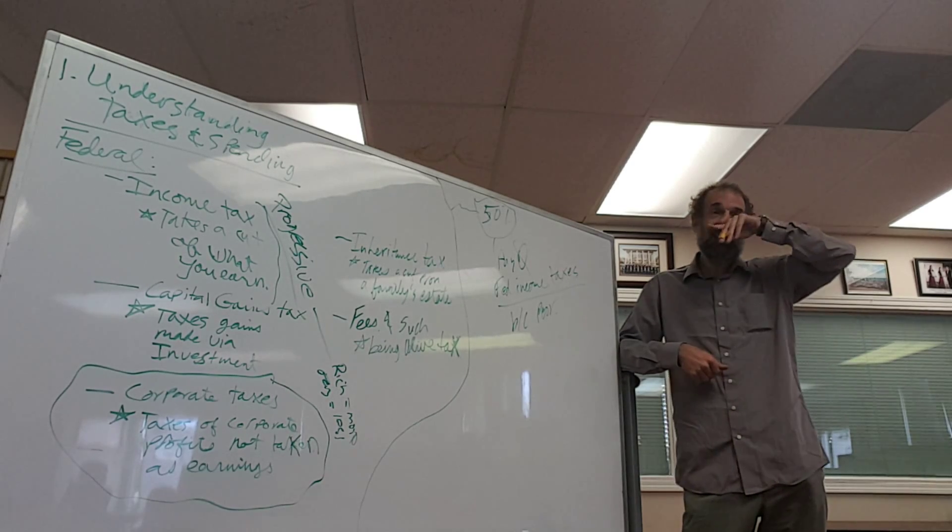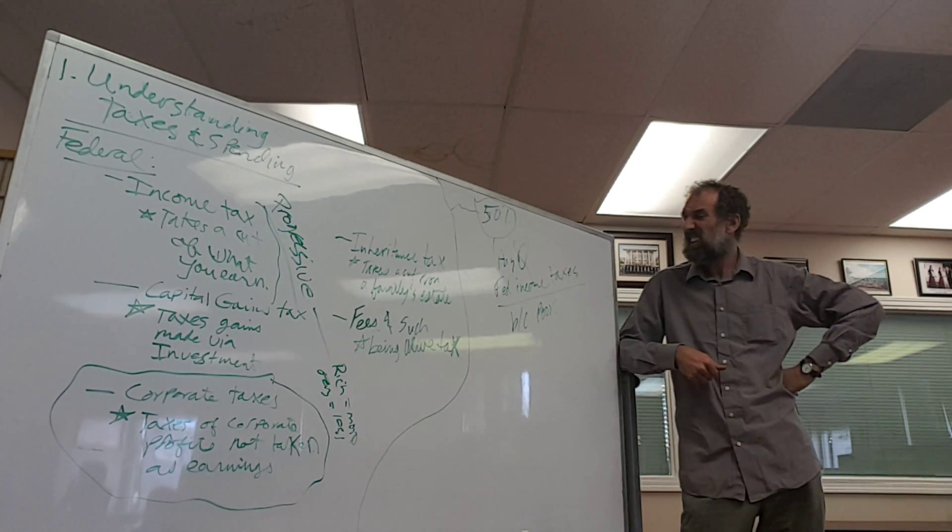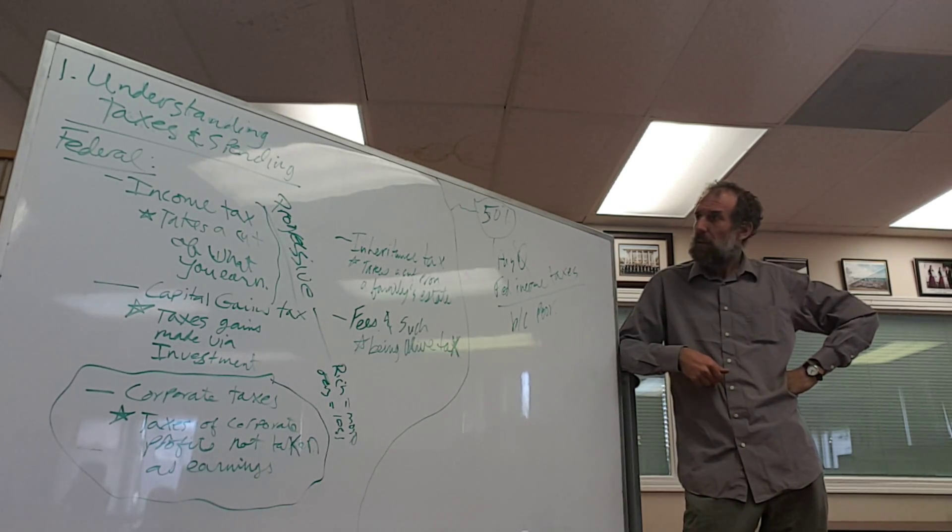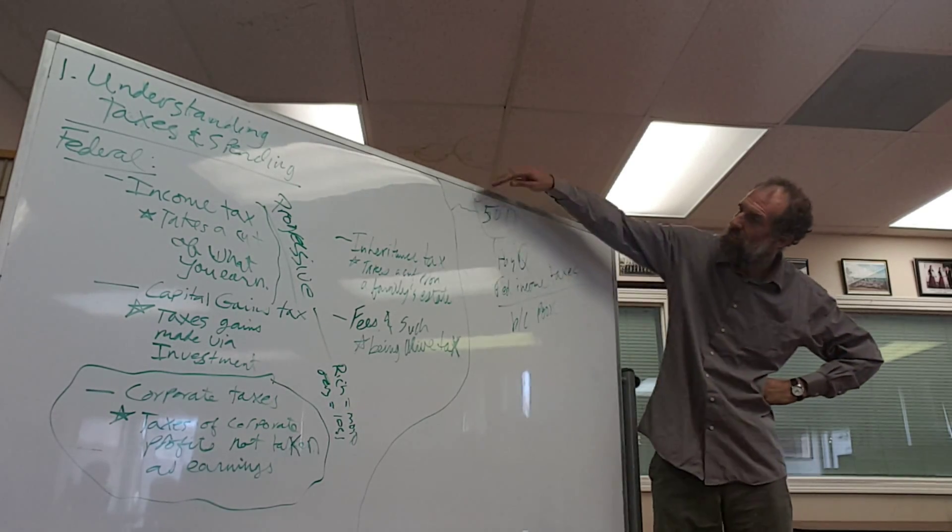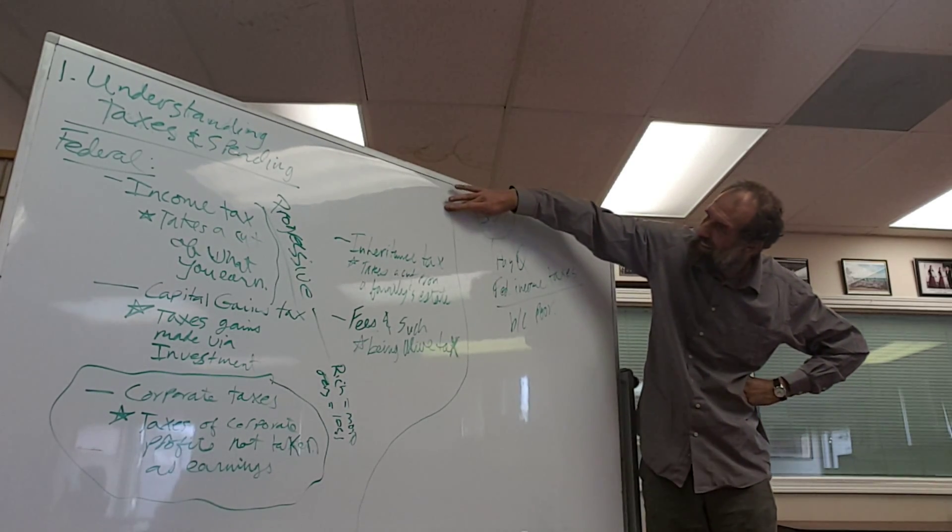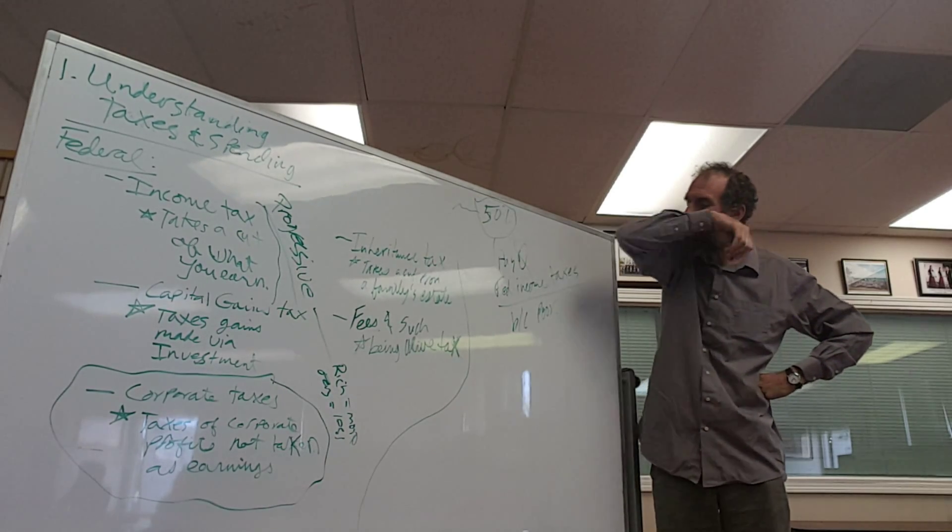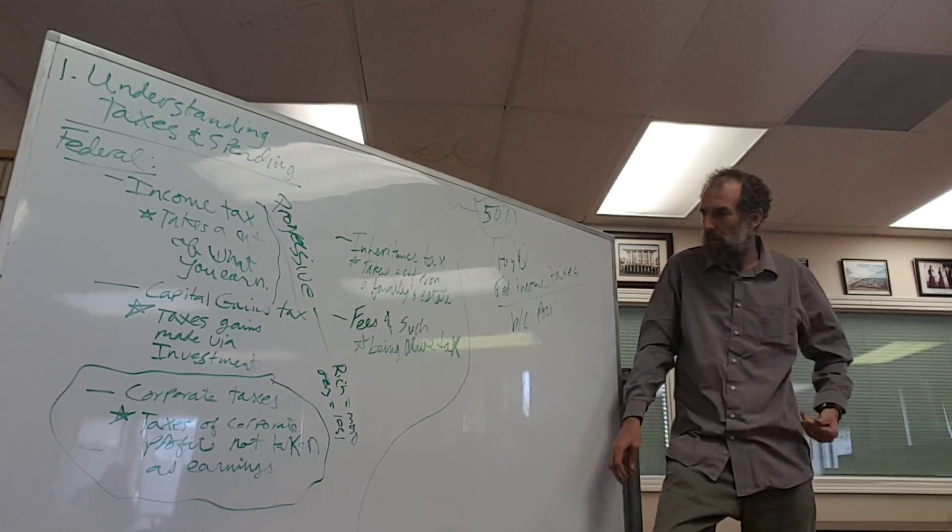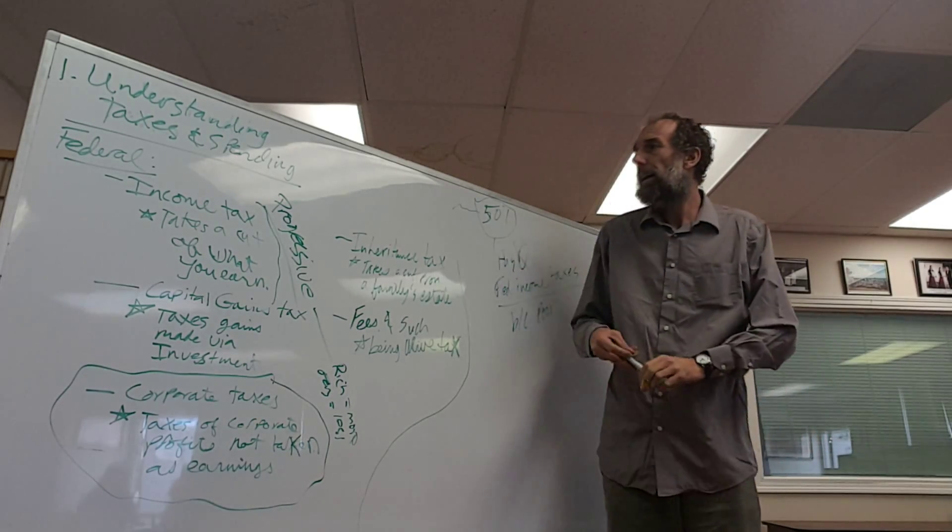So, ideally, we'd like to get rid of the income tax entirely. It would probably be the best solution to a lot of societal problems. Because government, of course, causes way more problems usually than it solves. So, dismantling government begins with getting rid of the ability for government to spend money.